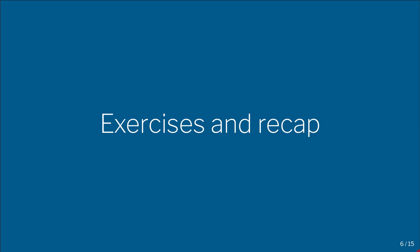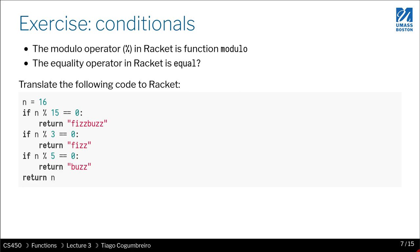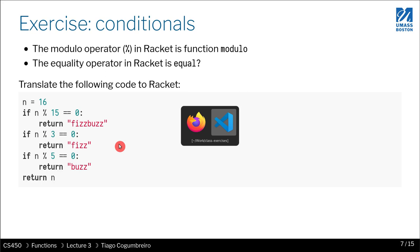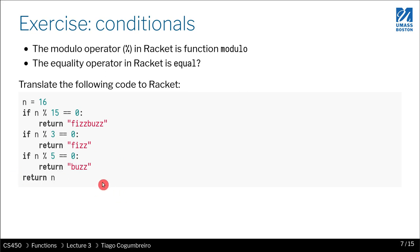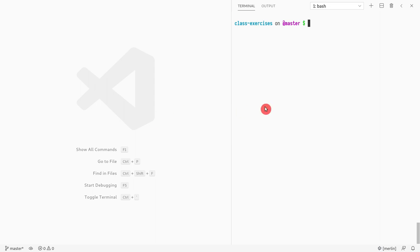Let's do a few exercises to recap what we've learned so far. The first example is a conditional where I give you a Python program and we write — translate this code into Racket. This is something similar to what you will do in the homework, so it's a good exercise to do right now. We have this code, I'm going to copy it.